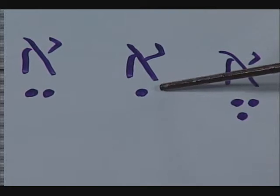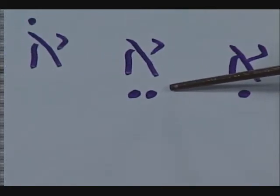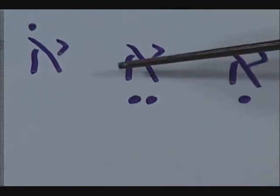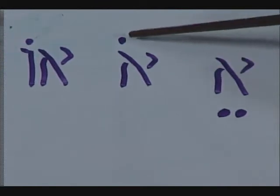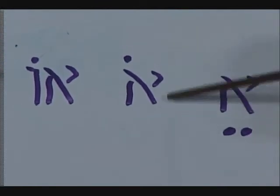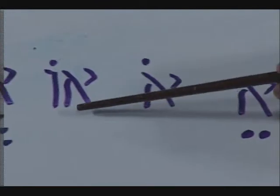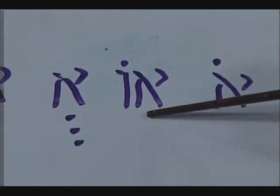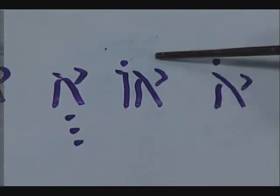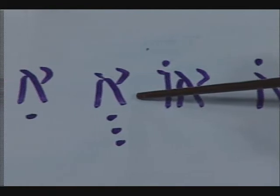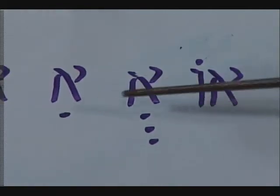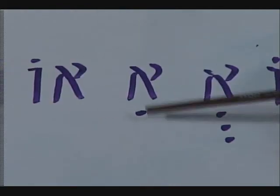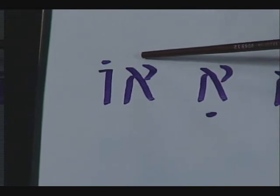A. E. E. A. Got a dot on top, so that would be O. Another way of making an O using the vowel. O. U. E. O.